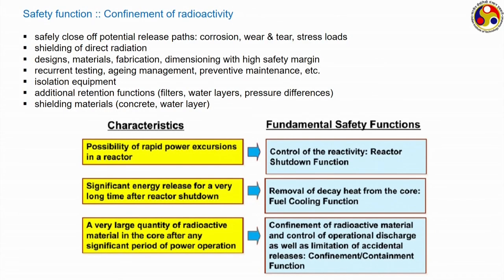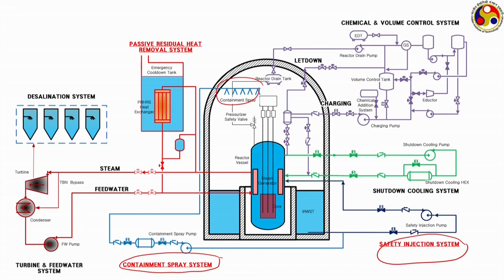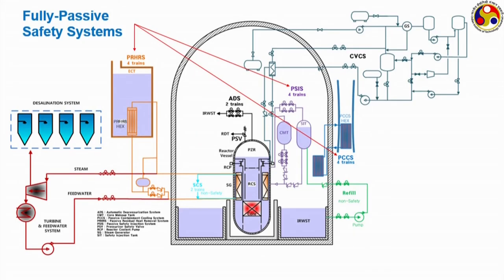The three fundamental safety characteristics are: control of reactivity and reactor shutdown functions, heat removal, and confinement of radioactivity. A schematic view of a power station shows several passive safety systems installed — safety injection systems, confinement spray systems, and passive heat removal systems — ensuring the five layers of safety. Another diagram shows a fully passive safety system using natural circulation.